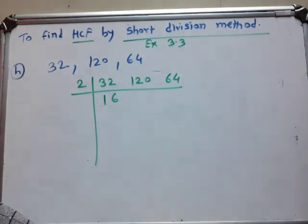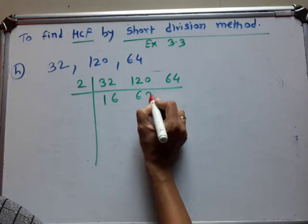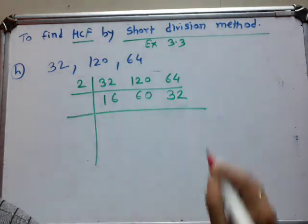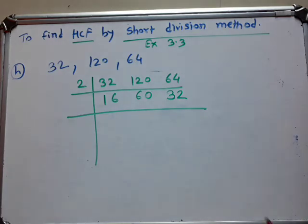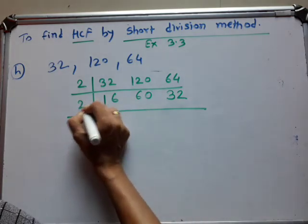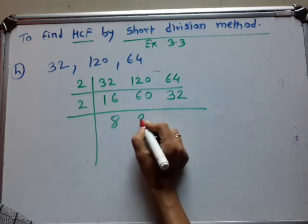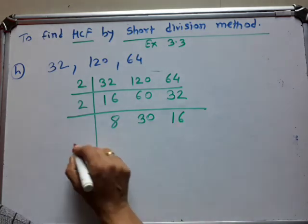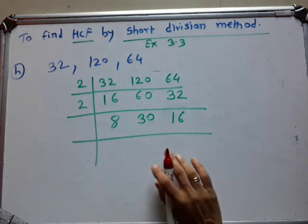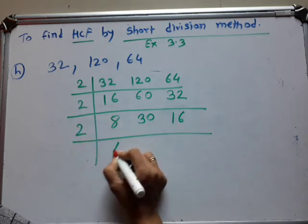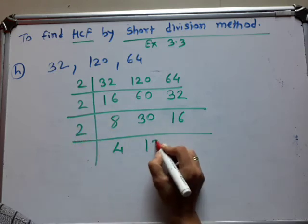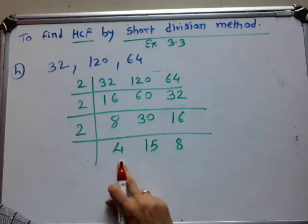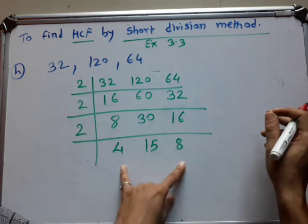Then 2 times 60 are 120 and this 0 stays as it is. Next, 2 times 32 are 64. So we get the numbers 16, 60, and 32. These are again all even numbers. So again divide by 2: 2 times 8 are 16, 2 times 30 are 60, and 2 times 16 are 32. Again check — these are again all even numbers. So again divide by 2: 2 times 4 are 8, 2 times 15 are 30, and 2 times 8 are 16. So we get the numbers 4, 15, and 8.